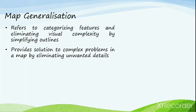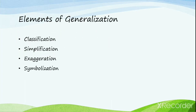Generalization refers to categorizing the features and eliminating visual complexity by simplifying the outlines of a map. Our earth is too large and its phenomena are too complex for anyone to grasp through direct observation. Generalization provides a solution by reducing complexity and eliminating unwanted details. The overall aim of generalization is to enhance map communication. There are four major elements: classification, simplification, exaggeration, and symbolization.